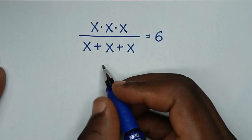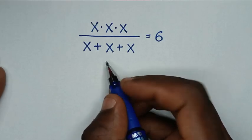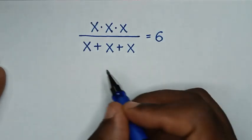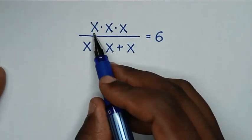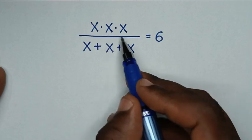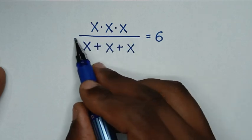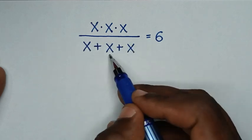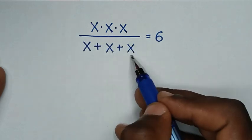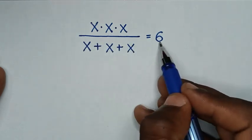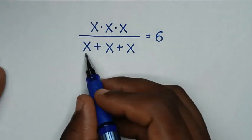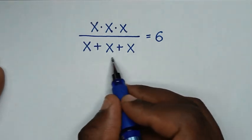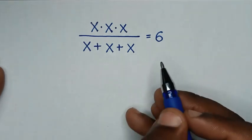Hello, you are welcome to solve this math problem which is x times x times x over x plus x plus x is equal to 6. To find the values of x from this equation.